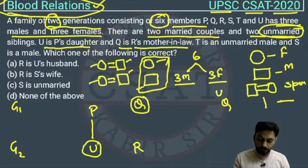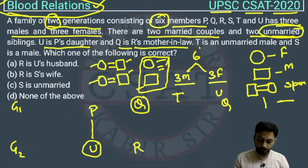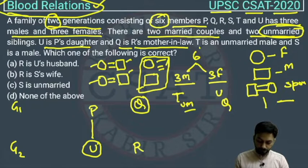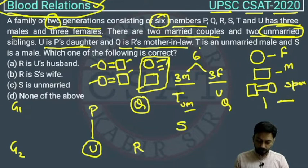T is an unmarried male. We established that there is one unmarried female and one unmarried male. T is the unmarried male, so T could come in generation 1 or generation 2. Also, S is given as a male.